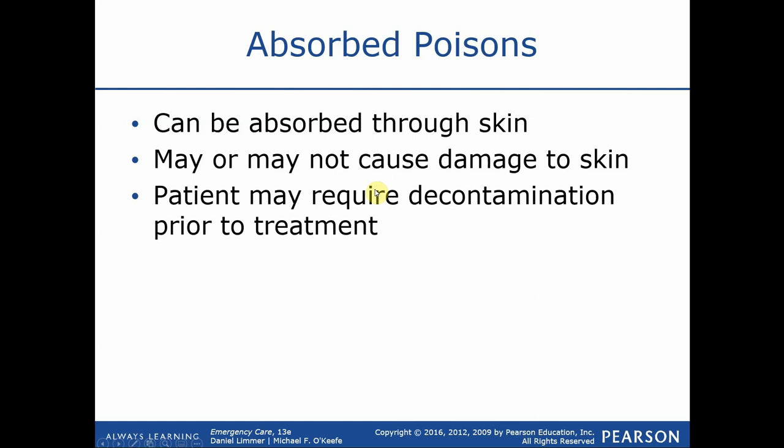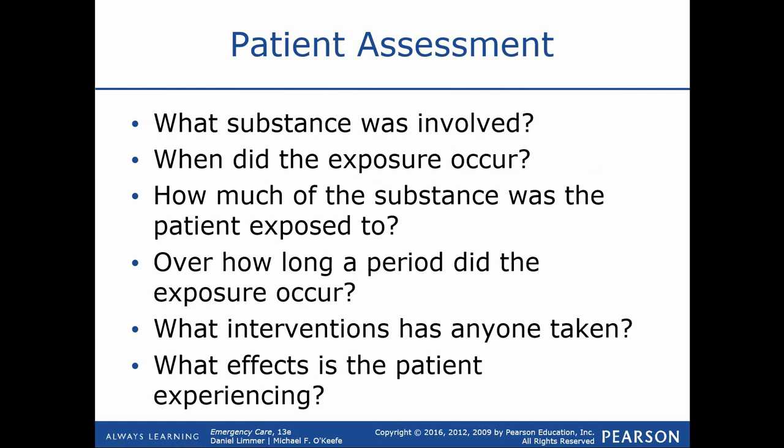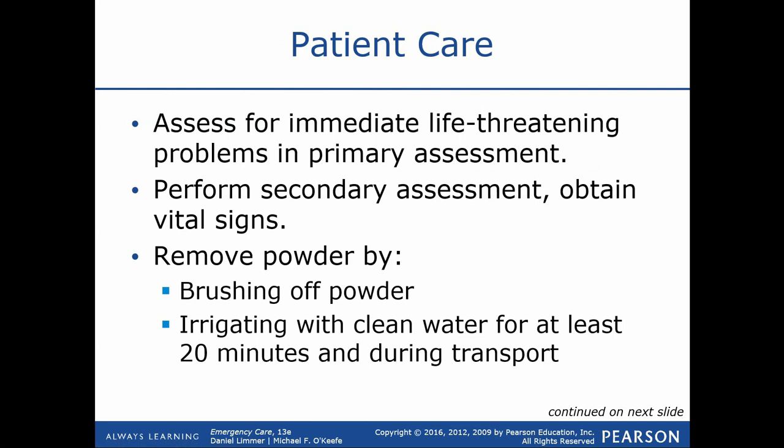Absorbed poisons include things like poison ivy, where the poison contacts the skin, is absorbed, and causes a rash. There's nothing different about the assessment for absorbed poisons. We may want to brush off a dry powder, and some things we irrigate with water — but we need to identify the substance first, as some react poorly with water. We also have to think about runoff: if a dry powder on the chest becomes wet, it could run down and cause burns in other parts of the body. Most often we brush the powder off first, then irrigate.